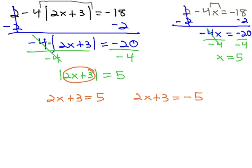This now gives us a simple two-step equation, which we can solve by subtracting 3, giving us 2x equals 2, and dividing by 2, giving us x equals 1.